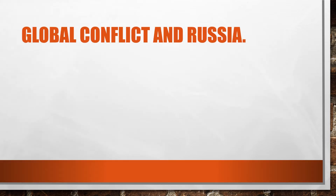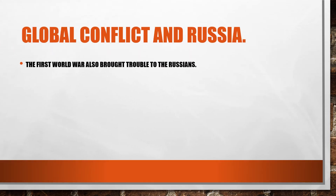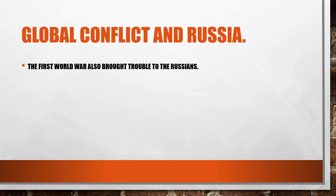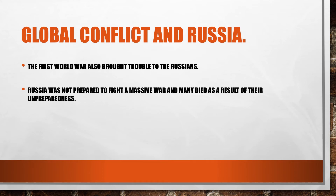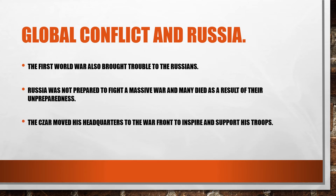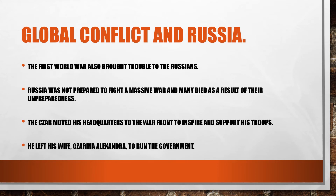World War I also brought trouble to Russia. Russia was not prepared to fight such a massive war — it was not an industrialized country and lacked the technology many other European nations had. Many Russians died as a result of their unpreparedness. The Czar moved his headquarters to the war front to inspire his troops, leaving his wife Czarina Alexandra to run the government back home.